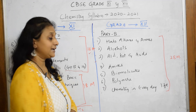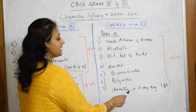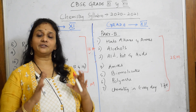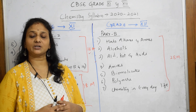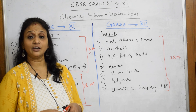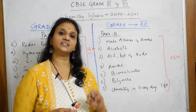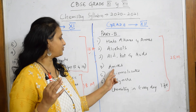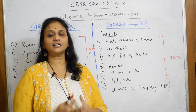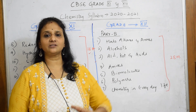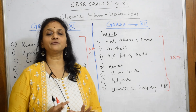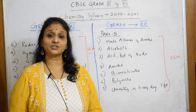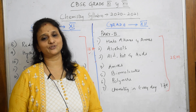All these organic chemistry chapters together come up to 28 marks. Organic chemistry is a fear for many, but don't worry — I have done a series called 'Organic Chemistry in Three Days,' where I've taken every reaction from NCERT, compiled all chapters together, separated reagent-wise and reaction-wise. It took me almost six months to put this together. I'm also planning a similar compilation for inorganic chemistry, though that will take time.